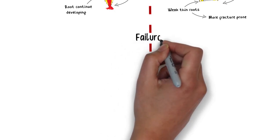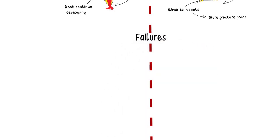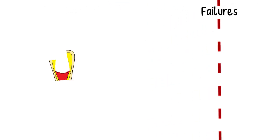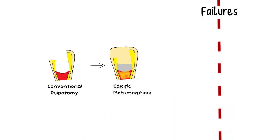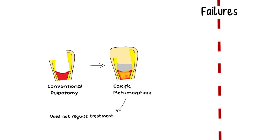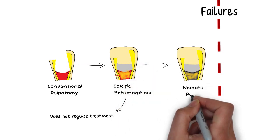Let's briefly discuss the possible causes of failure of Apexogenesis and Apexification. Cvek pulpotomy has a better success rate, but after conventional pulpotomy in which almost the entire coronal pulp is removed, the success rate of Apexogenesis is low and calcific metamorphosis is a common occurrence. Calcific metamorphosis is the filling of the pulpal space with hard tissue formation, but even after calcific metamorphosis, root canal treatment is not recommended since it is not itself a pathological condition. However, if the pulp becomes necrotic in the future and the canal becomes non-negotiable, then surgery would be necessary.